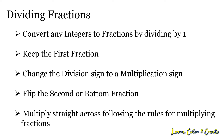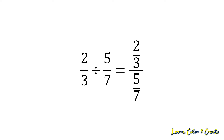Let's look at some examples. Our first example is two-thirds divided by five-sevenths. Division problems can be written horizontally or vertically — both follow the same rules. Just make sure it's the second or bottom fraction that gets flipped, and that you don't accidentally flip the first fraction.